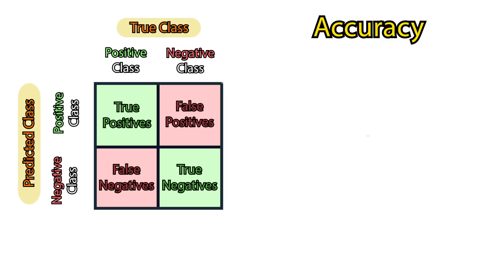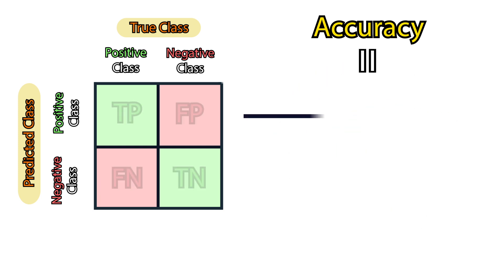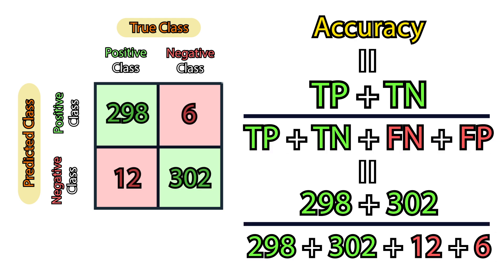Accuracy measures how often a model predicts correctly out of all the predictions it made. If we translate that to a formula, we will need to divide the total number of correct predictions by the total number of predictions.